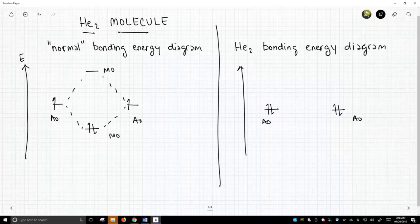Helium atom number one on the left, helium atom number two on the right. When we mix these two atomic orbitals, we get much the same picture: a higher energy and a lower energy orbital. Now we have four electrons to populate our new molecular orbitals.